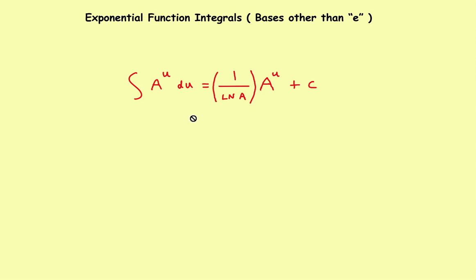In this video we'll take a look at some examples of how to find the integrals of bases other than e using this formula. If you haven't done it yet, I would back up and watch part one of this series that shows where this formula came from — we actually derived it. The idea is that the integral of a to the u is equal to 1 over the natural log of the base times the original function, plus c.